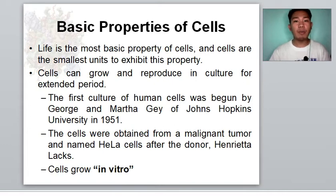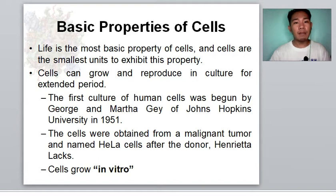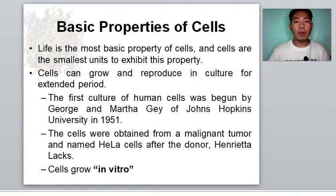The first culture of human cells was begun by George and Martha Gray of Johns Hopkins University in 1951. The cells were obtained from a malignant tumor and named HeLa cells after the donor, Henrietta Lacks. HeLa cells, descended by cell division from this first cell sample, are still being grown today. Because they are so much simpler to study than cells situated within the body, these cells are grown in vitro — meaning in culture or outside the body — and have become an essential tool of cell and molecular biologists.